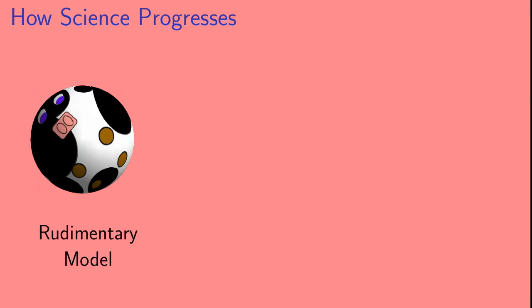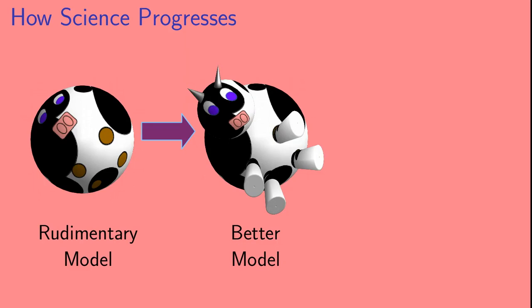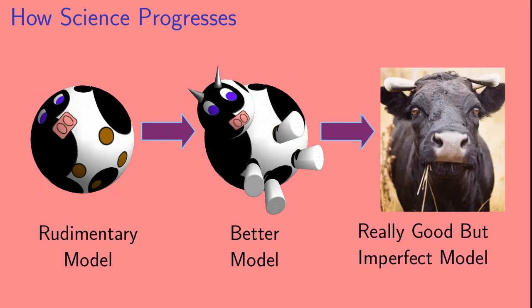Let's say there's some natural phenomenon that we want to understand. We can make a rudimentary model of that phenomenon, here represented by a spherical cow. That rudimentary model can lead to a better model, which in turn can lead to a really good but nonetheless still imperfect model. And then the process continues, where we try to make each model less imperfect than the one before it.